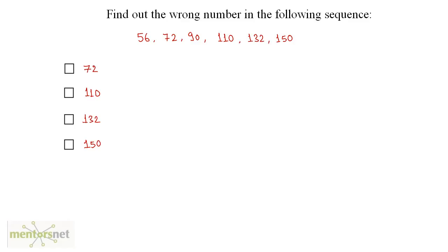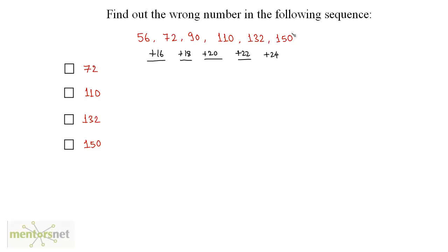For the final sequence, to get 72 from 56 we add 16; to get 90 from 72 we add 18; to get 110 from 90 we add 20. The pattern increases by 2 each time: 16, 18, 20, 22, 24. So 132 plus 24 should give 156, not 150. Therefore 150 is the wrong number and option D is the correct answer.